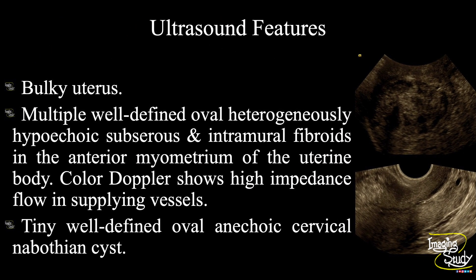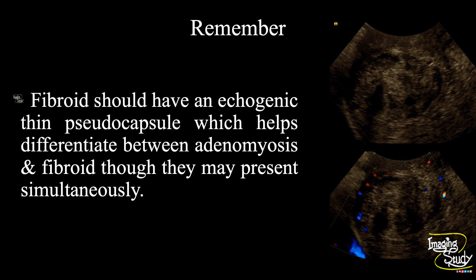In summary, a bulky uterus is noted. There are multiple well-defined oval heterogeneously hypoechoic subserous and intramural fibroids within the anteromyometrium of the uterine body. Color Doppler shows high impedance flow in supplying vessels, indicating multiple subserous and intramural degenerative fibroids. A tiny well-defined oval anechoic cervical Nabothian cyst is also noted. A key take-home message: fibroids should have an echogenic thin pseudo capsule, which helps differentiate between adenomyosis and fibroid, though they may present simultaneously.